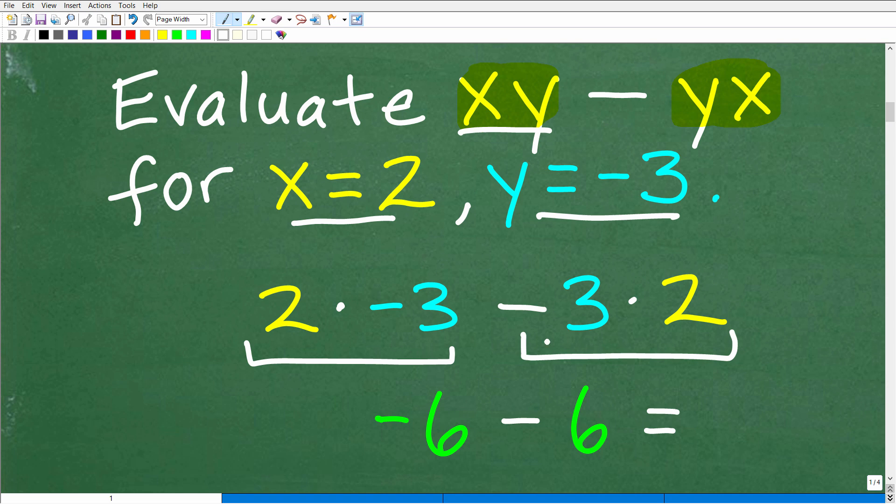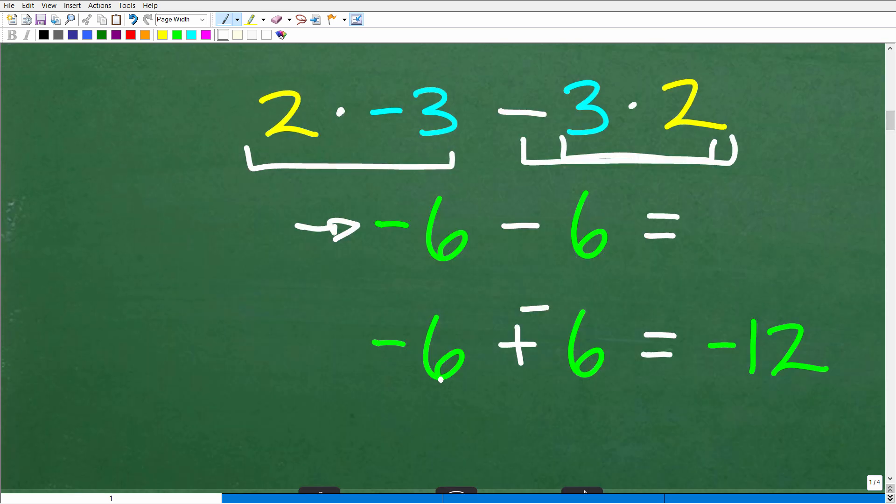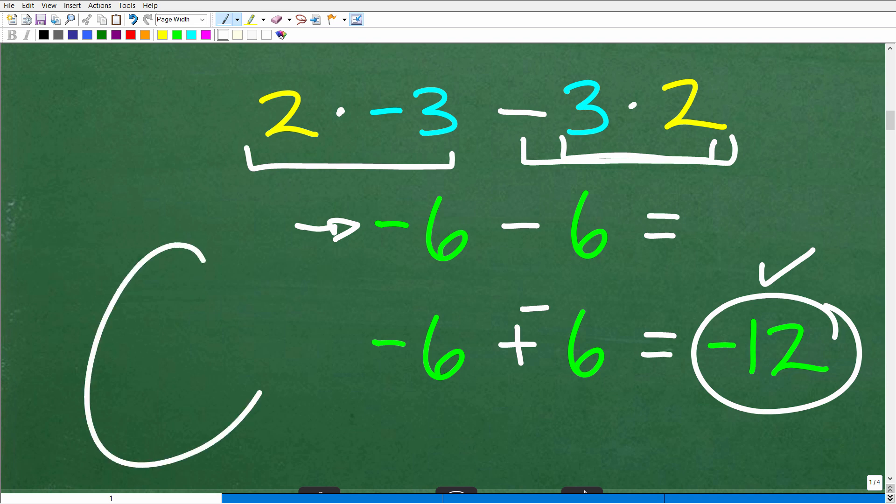For those of you that got this right, you're like: I would never make that error. But it does happen, and I'm going to show you a way you can prevent this. Let's suppose somebody set this problem up this way. 2 times negative 3, negative 6. And then they're going to go: 3 times 2, that's 6. So I got negative 6 minus a positive 6. And then they'll go plus negative 6, so they'll end up with negative 12.